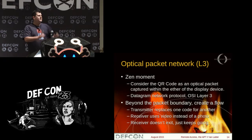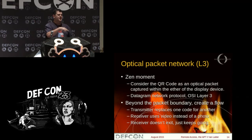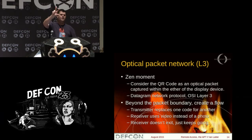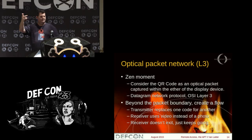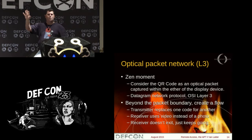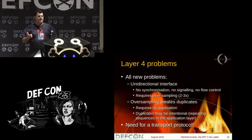The Zen moment: if we consider the QR code as an optical packet sitting within the ether of the display device, then what it represents is a datagram at OSI layer 3. To get beyond the packet boundary, we want to replace one code for another — multiple codes going past the viewer. The receiver then uses video instead of a photo: we want to take a video and keep processing. This creates a number of layer 4 problems.